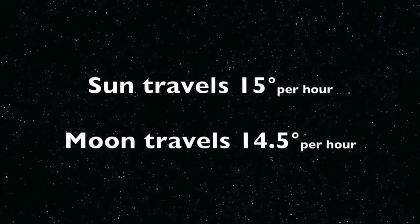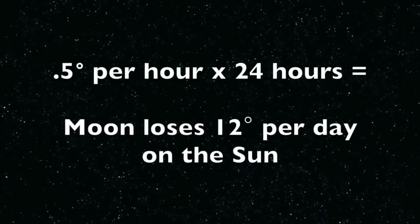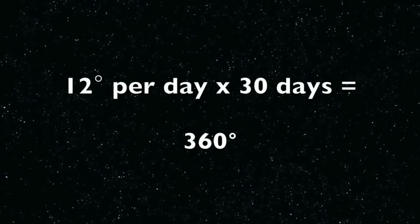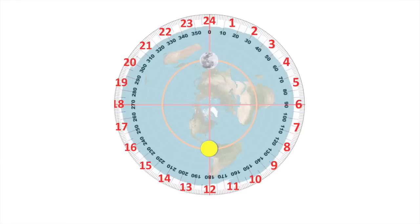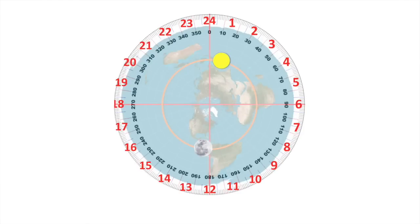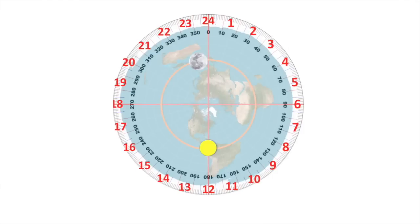So the moon, because it's slightly slower, it loses a half a degree on the sun per hour. This half a degree per hour equals 12 degrees per day. So as the sun and the moon circle above in the firmament, the moon loses 12 degrees per day on the sun. And this 12-degree loss causes the lunar phases. As you see in this little animation, we've got the sun and the moon circling above one hour at a time, and by the time the sun gets back to its original position at 12 noon after one full day, the moon has lost 12 degrees on the sun. This happens every day, and this loss of 12 degrees per day is what causes the phases of the moon.